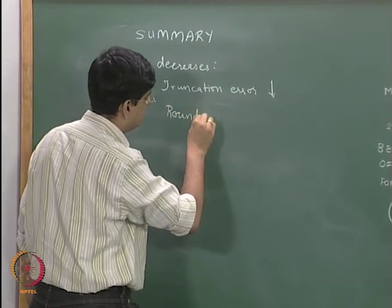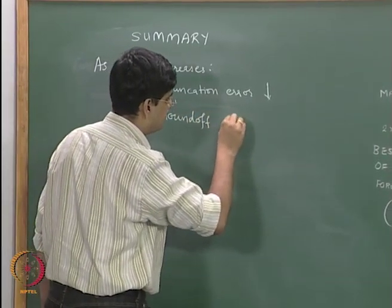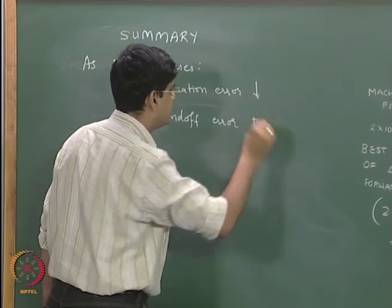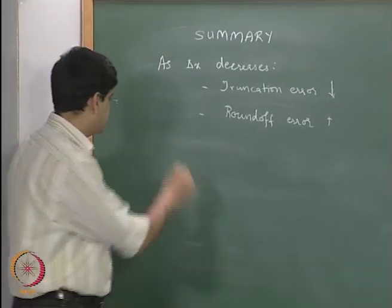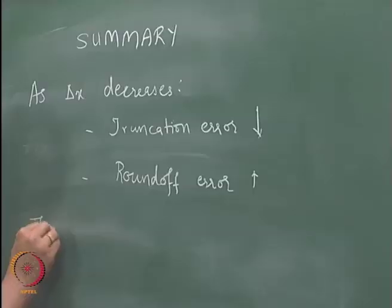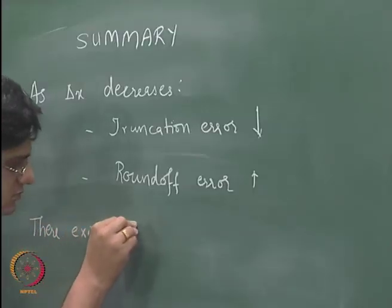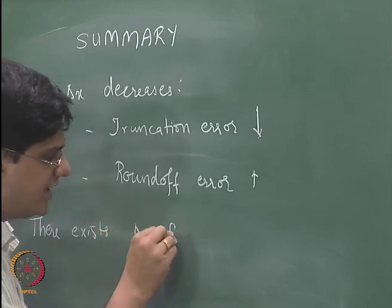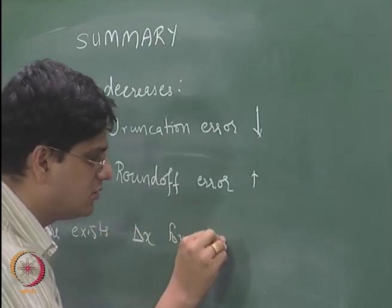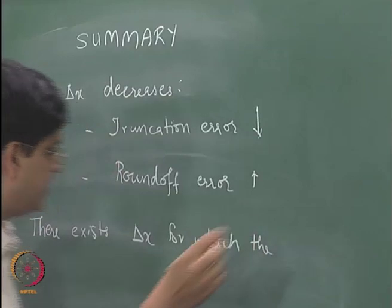So, there exists delta x for which the total error is minimum.